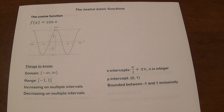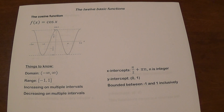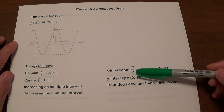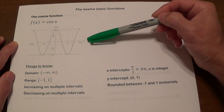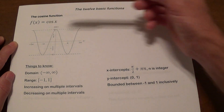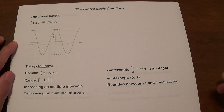The next one is the cosine function, f of x equals cosine x. The main difference between sine and cosine is a horizontal shift, which you'll learn in more detail in trig class. Its domain is all real numbers, and its range is also negative 1 to 1. It is also increasing and decreasing over multiple intervals. It has x-intercepts at points matching pi over 2 plus pi times n, where n is an integer — so at pi/2, 3pi/2, 5pi/2, negative pi/2, etc. Its y-intercept is at (0, 1).